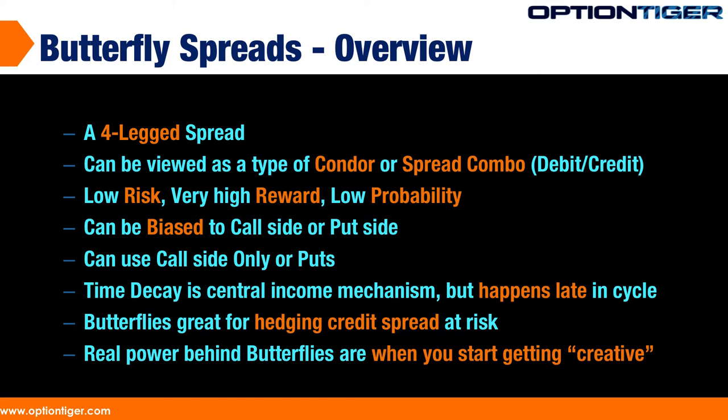The butterfly is an advanced spread in general. It's a four-legged spread that can be viewed in many different ways. If you've seen a butterfly, it generally has a pyramid structure — a pointy structure going up into the reward zone, meeting at one point. It is also a specific type of iron condor, and can be viewed as a combination of spreads.